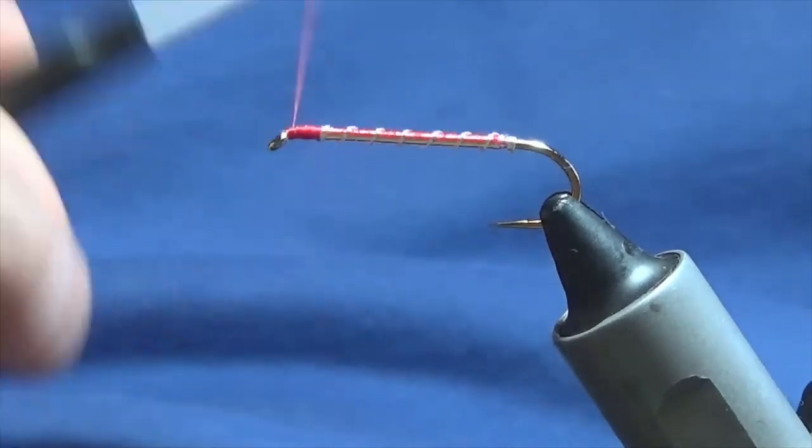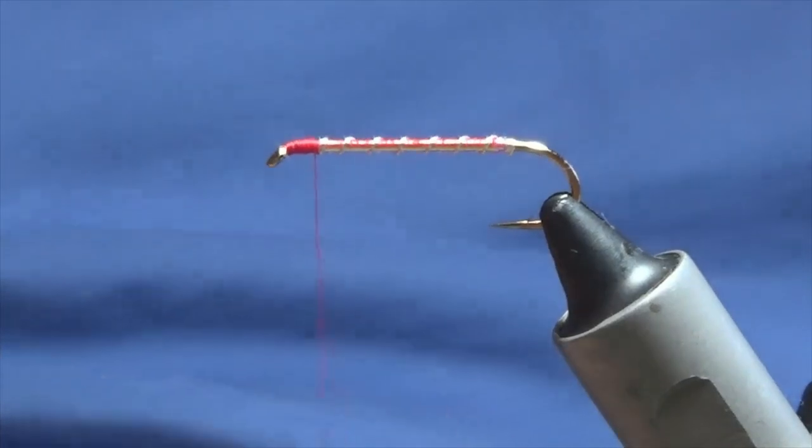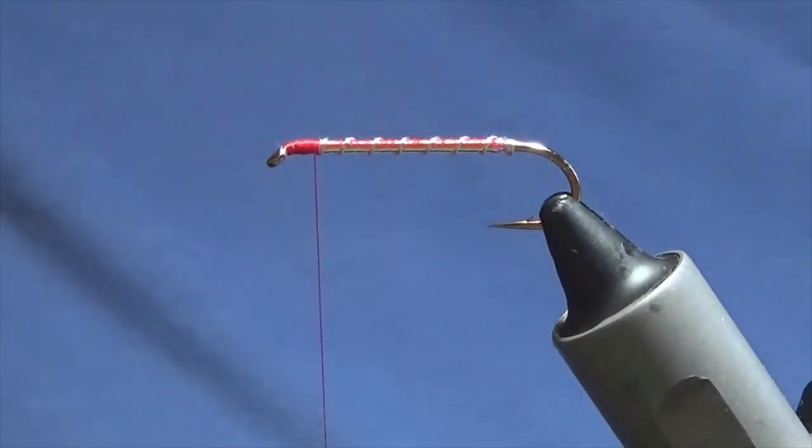Just bring the thread to the eye and we'll work our thread back down to there. Now two parts to the wing. On the original pattern it was pearl Lurex and blue Lurex that was used.